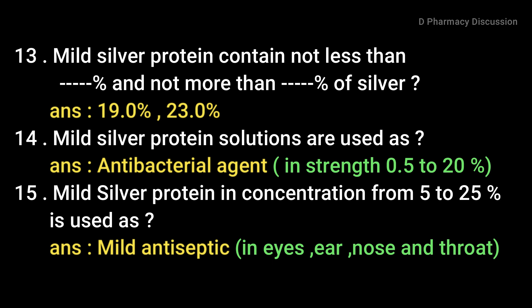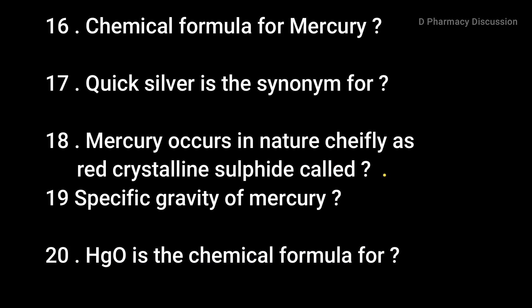Mild silver protein in concentration from 5 to 25% is used as a mild antiseptic for the eye, nose, and throat. It functions both as an antibacterial agent and as a mild antiseptic depending on the concentration strength used.